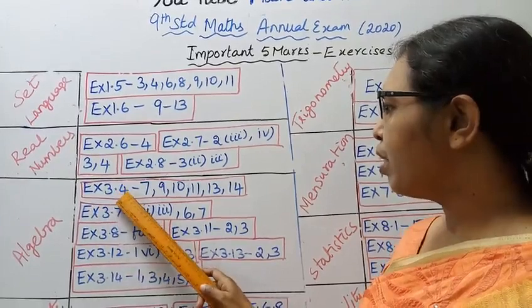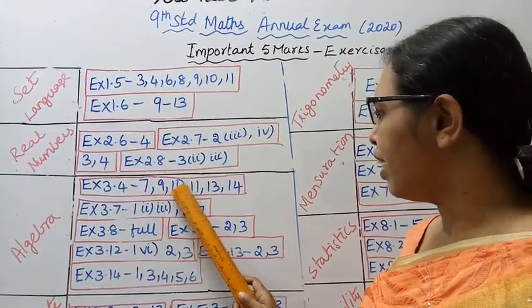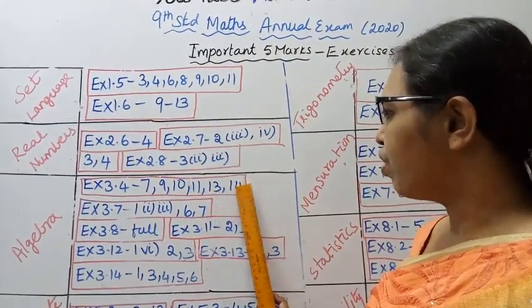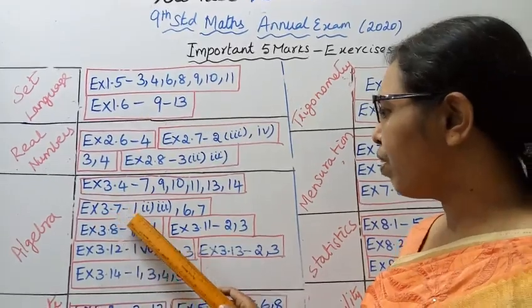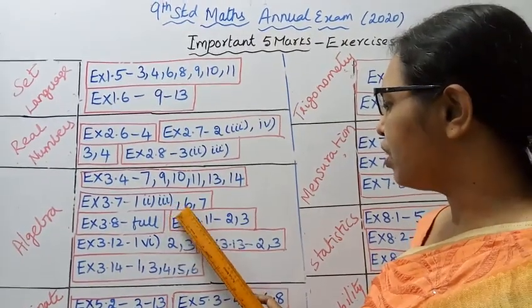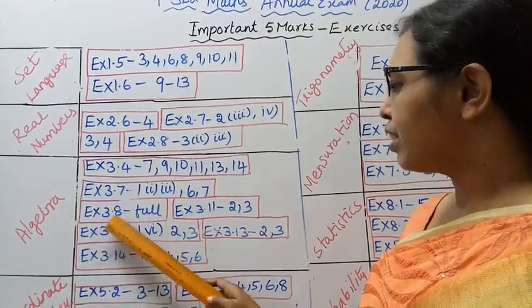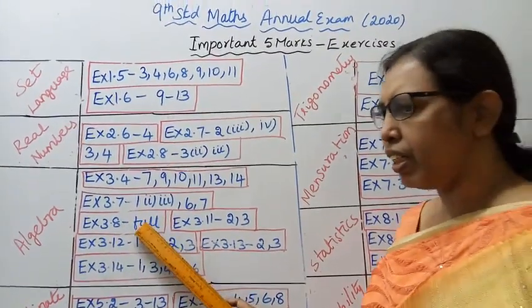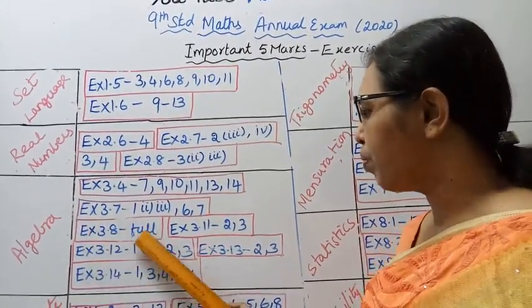Algebra. Exercise 3.4: problems 7, 9, 10, 11, 13, 14. Exercise 3.7: problems 1 second subdivision, 3rd subdivision, 6th sum, 7th sum. Exercise 3.8: full chapter - practice this if you don't have time.